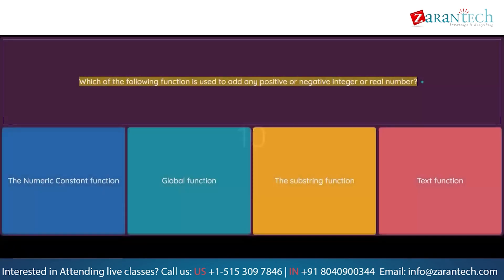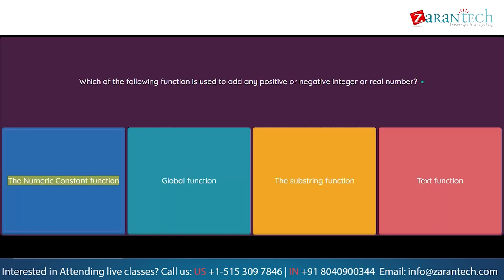Question: Which of the following functions is used to add any positive or negative integer or real number? Option 1: The numeric constant function. Option 2: Global function. Option 3: The substring function. Option 4: Text function.